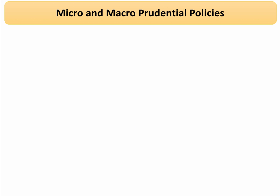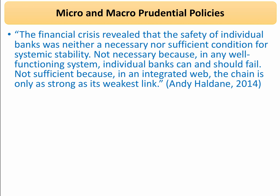Systemic risk is really important, and this has led to the emergence of micro and macro prudential policies. Here's a great quote from Andy Haldane at the Bank of England: 'The financial crisis revealed that the safety of individual banks — micro — was neither a necessary nor sufficient condition for economic systemic stability.' Not necessary because in any well-functioning system, individual banks can and should fail. Not sufficient because in an integrated, interconnected web, the chain is only as strong as its weakest link.